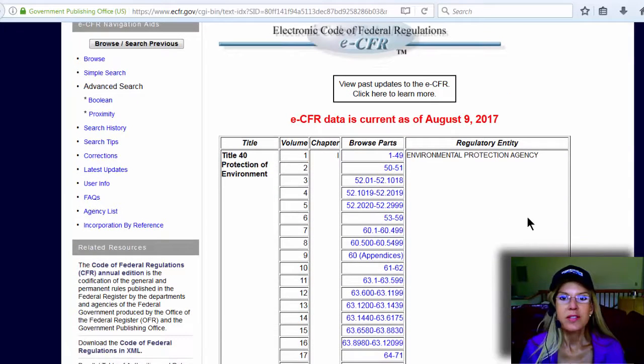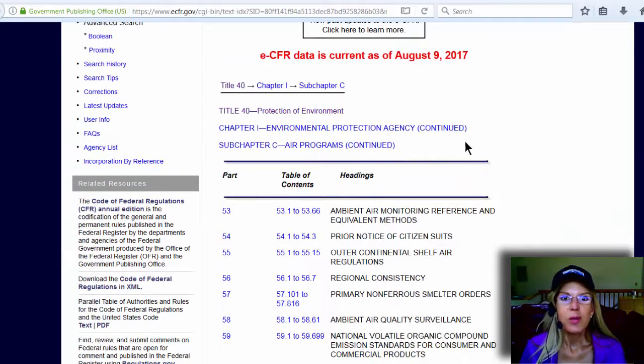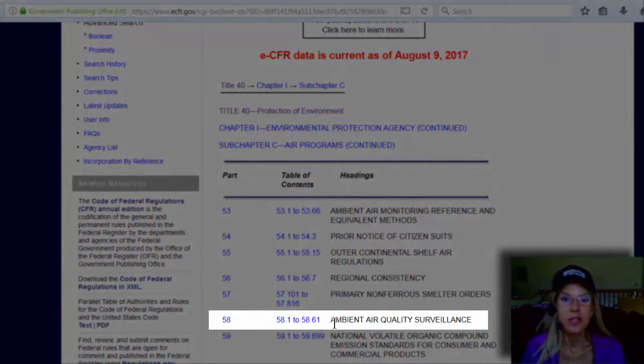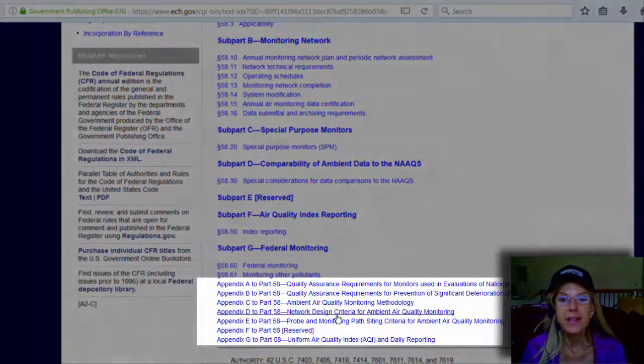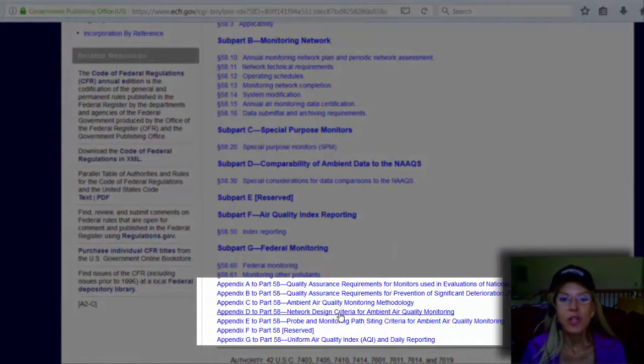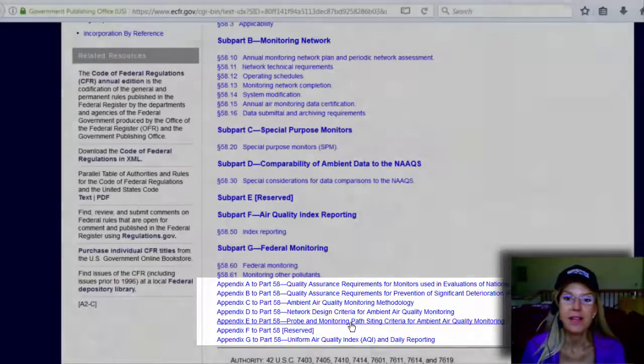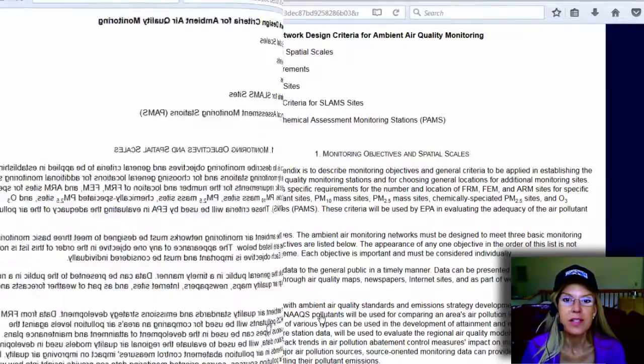Click Go. That gives us all these different sections. We know it's 58, which is between 53 and 59. So we click there. And that pulls up these different parts of 40 CFR Part 53 through 59. And we know we want to be looking at appendices for 58, which is ambient air quality surveillance. And we go to Appendix D, Network Design Criteria for Ambient Air Quality Monitoring. And you see that Appendix E is Probe and Monitoring Path Siting Criteria. So let's look at Appendix D first.